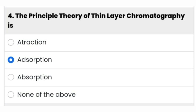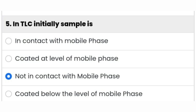The principal theory of thin layer chromatography is adsorption — the second option is the right answer. The fifth question: in TLC, the sample is initially not in contact with the mobile phase — the third option is the right answer.